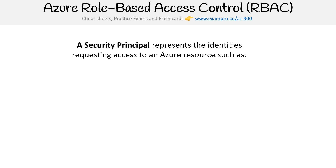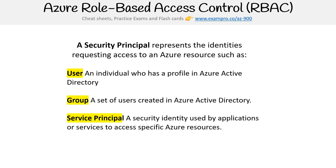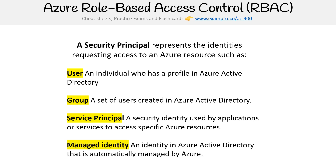Talking about the security principle first — this represents the identity requesting access to the Azure resource, so this is who wants to have access. You could have a user, which is an individual profile in your Azure Active Directory; you could have a group of users in your Azure Active Directory; you could have a service principal, which is a security identity used by applications or services to access specific Azure resources — this is what a service wants access. And you have managed identity, which is an identity in Azure Active Directory that is automatically managed by Azure. That one's a bit harder to describe, but it's not that important for the exam.